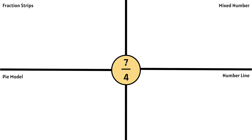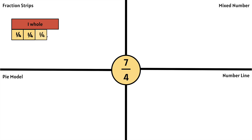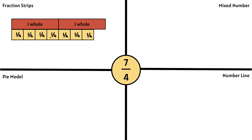Let's start by representing 7 fourths using fraction strips. Let's create 1 whole for reference. Let's start counting: 1 fourth, 2 fourths, 3 fourths, 4 fourths. We know that 4 fourths makes 1 whole. Let's keep going because we need 7 fourths: 5 fourths, 6 fourths, 7 fourths. We notice that 7 fourths makes 1 whole and 3 fourths of another whole, so we can represent 7 fourths as a mixed number. We have 4 fourths which makes 1 whole, and 1, 2, 3 fourths of another whole. So 7 fourths is the same thing as 1 and 3 fourths.